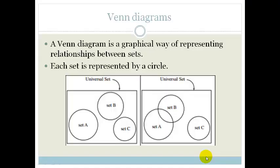First of all, a Venn diagram is a graphical way of representing relationships between sets. And each set is represented by a circle. So if you look over here, you can see that we've got set B, we've got set A, and we've got set C. And then we have the universal set.